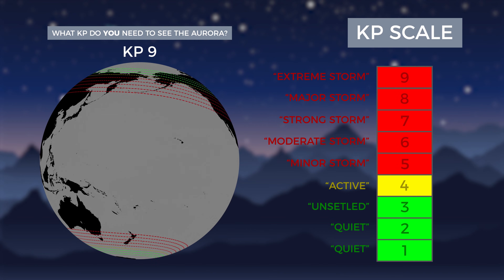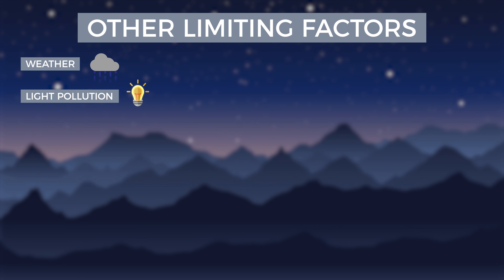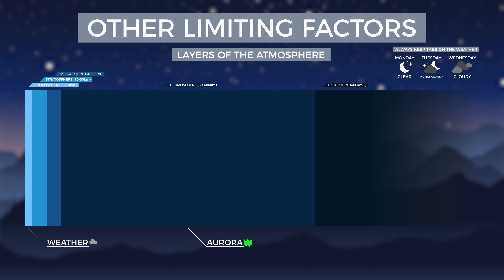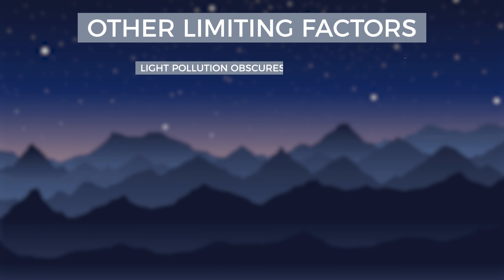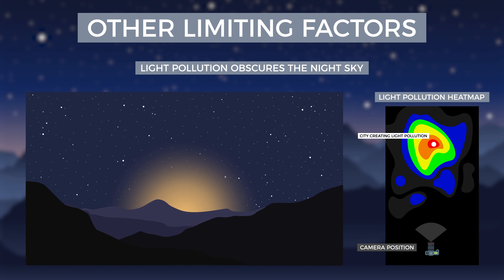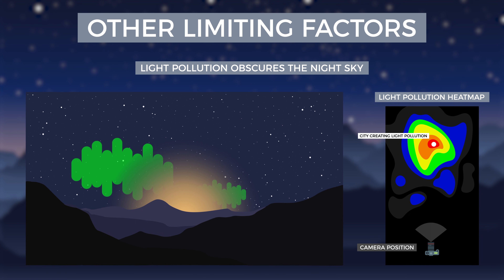Besides strong geomagnetic activity, weather and light pollution will dictate when and where you photograph the aurora. Since the aurora takes place hundreds of kilometers above us in Earth's atmosphere, any type of cloud cover will obscure the phenomena. Keeping tabs on the weather should become customary if you want to capture the aurora. Light pollution, just like air pollution, can be found over cities and can completely obscure even the brightest of stars, let alone wispy aurora. Try to find an area with low light pollution using a light pollution map, and check the urban areas in the direction you will be shooting, as aurora will often remain on the horizon, sharing space with light pollution from distant cities.